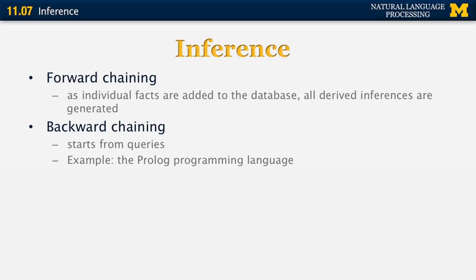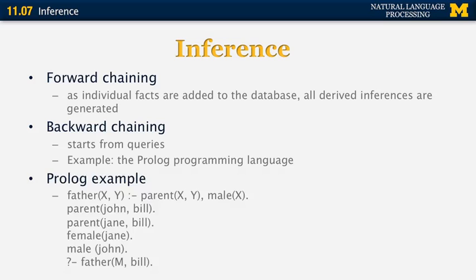Backward chaining is implemented natively in the Prolog programming language. In Prolog, you can define the following inference statement in the knowledge base: X is the father of Y means that X is a parent of Y and that X is male. If you have the facts — John is the parent of Bill, Jane is the parent of Bill, Jane is female, and John is male — and you get a query: find M where M is the father of Bill, then using backward chaining you go to the knowledge base and find that for M to be the father of Bill, there must be true statements saying M is the parent of Bill and M is male.